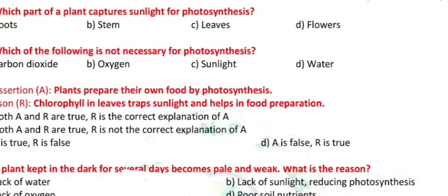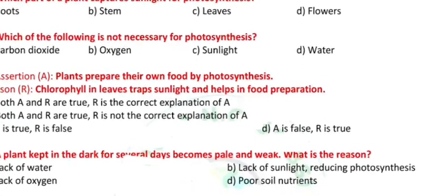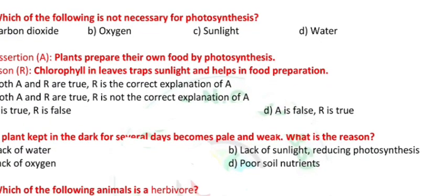Question 2: Which of the following is not necessary for photosynthesis? a) Carbon dioxide, b) Oxygen, c) Sunlight, d) Water.